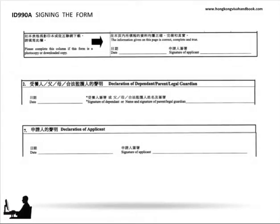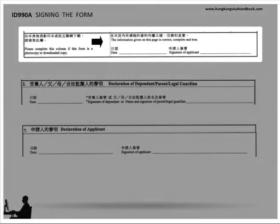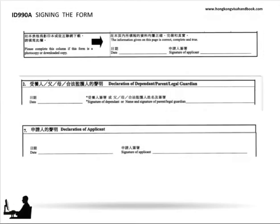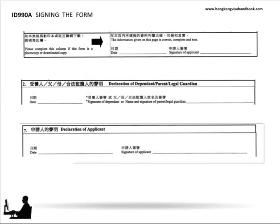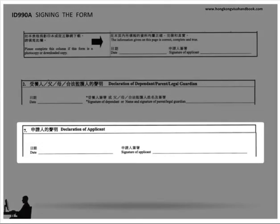On the form, there are three areas to declare the truthfulness, correctness and completeness of the information you've submitted in pursuit of your application. And these are at the bottom of each page of the form, in respect of any dependents joining in the application, and at the end by the principal applicant him or herself.